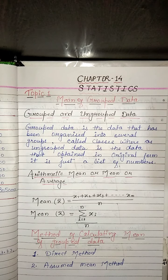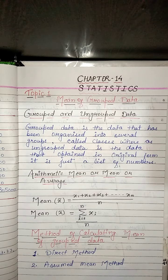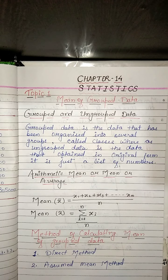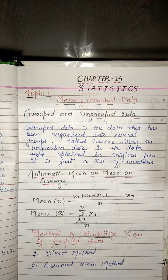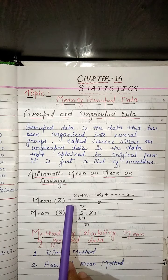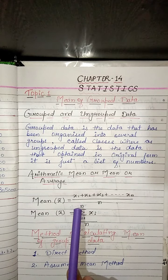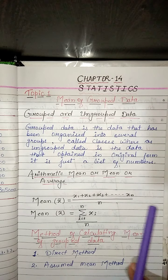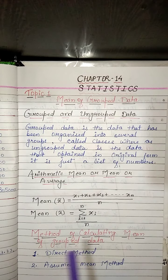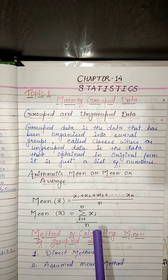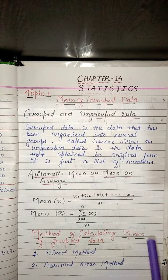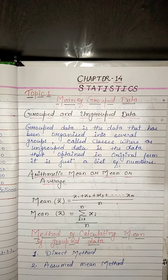Now we are going to discuss the arithmetic mean, also called the mean or average. The arithmetic mean of a set of observations is obtained by dividing the sum of the values of the observations by the total number of observations. So, mean x̄ = (x1 + x2 + x3 + ... + xn) / n, or equivalently, x̄ = (1/n) × Σxi, where the summation runs from i = 1 to n.